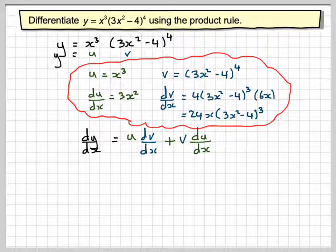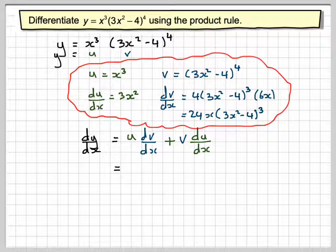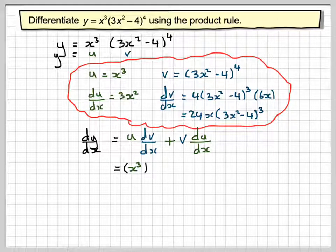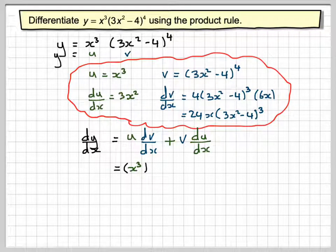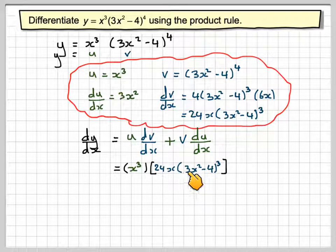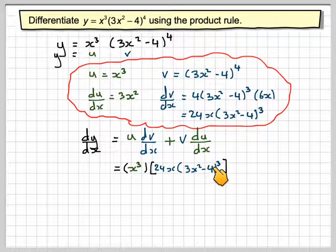So that's going to be x cubed, make sure you use brackets, times dv by dx, put this all in brackets, use square brackets here, so it's 24x times 3x squared minus 4 to the power of 3.